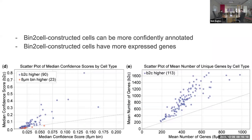They used two other metrics to show where bin-to-cell outperforms eight micrometer Visium data. In panel D, CellTypist gives a confidence score based on how similar the gene expression profile is to the nearest cell type — a high score means it confidently looks like a particular cell type. Each point here is a cell type, and in general, bin-to-cell gave much higher confidence scores, suggesting we're getting more realistic data than with eight micrometer bins.